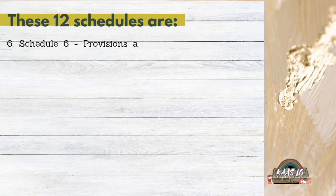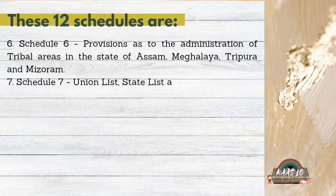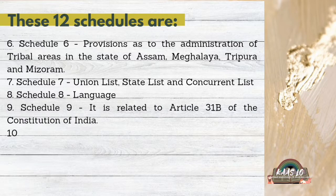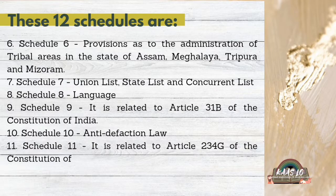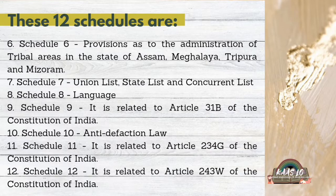Schedule 6 — Provisions as to the Administration of Tribal Areas in the States of Assam, Meghalaya, Tripura and Mizoram; Schedule 7 — Union List, State List and Concurrent List; Schedule 8 — Languages; Schedule 9 — Related to Article 31B of the Constitution of India; Schedule 10 — Anti-Defection Law; Schedule 11 — Related to Article 243G of the Constitution of India; Schedule 12 — Related to Article 243W of the Constitution of India.